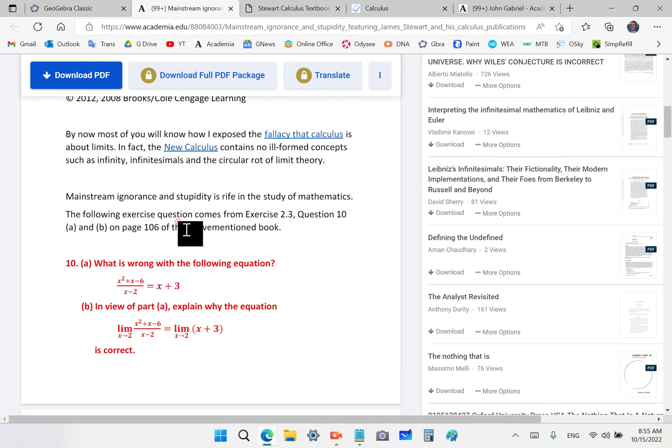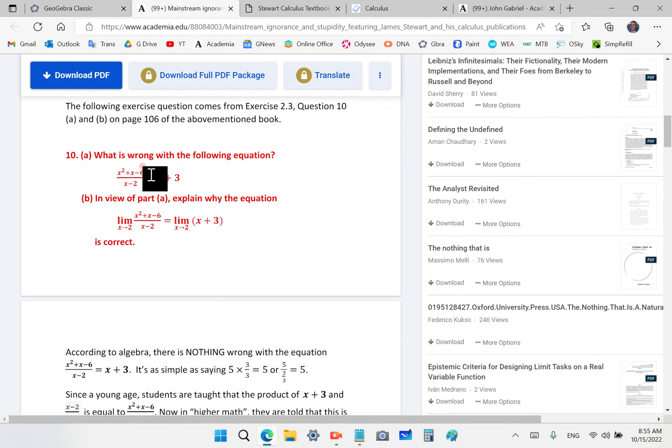So in one of his books he writes, what is wrong with the following equation? Now look at this equation, people. It says (x^2 + x - 6)/(x - 2) equals x + 3. It's a perfect equation.